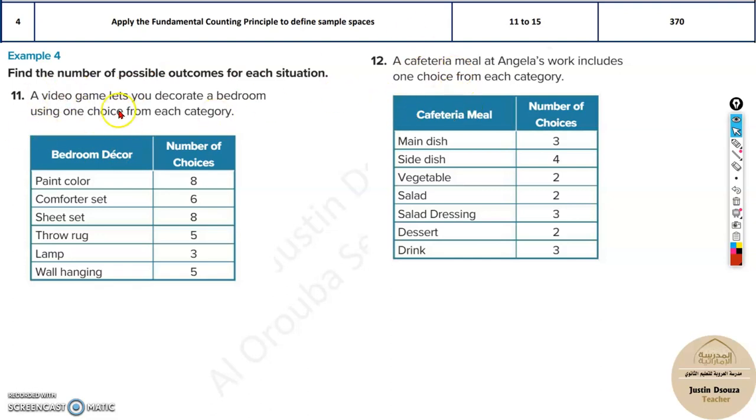We have real-world problems. They are very interesting. The first problem is about a video game that lets you decorate a bedroom using one choice from each category. You can decorate the bedroom based on the paint color or the comforter size, sheet set, throw a rug over here, the lamp, or wall hangings.